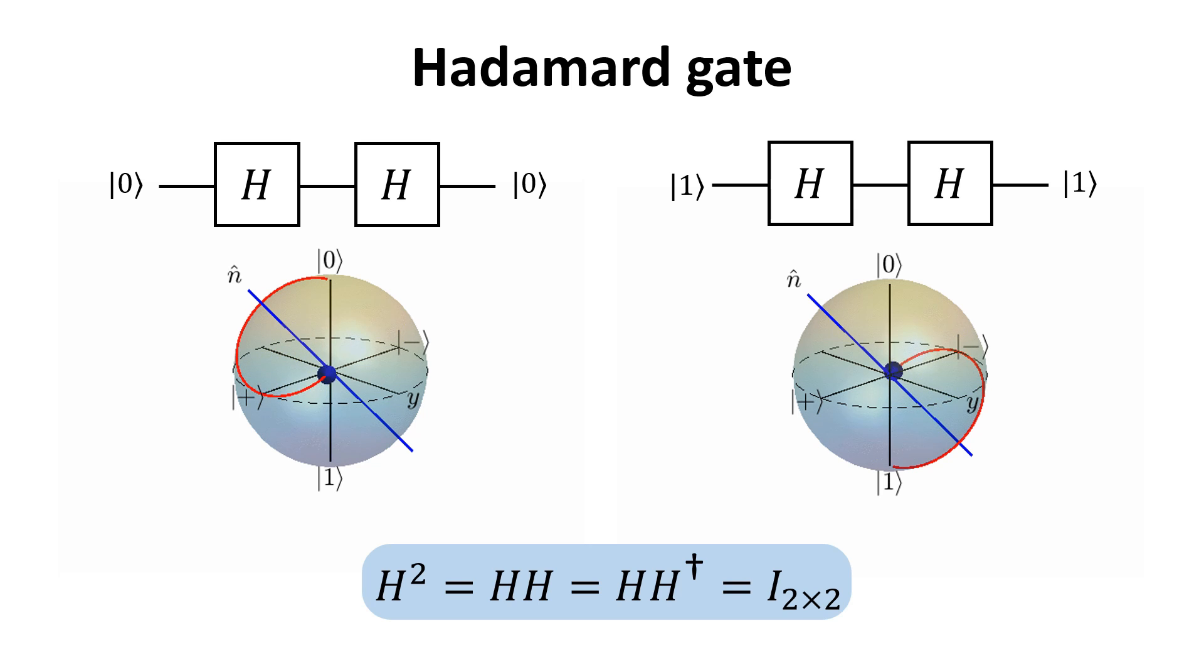We can also verify this through its matrix representation. Recall that the H gate is Hermitian and unitary. Since it is Hermitian, it is equal to its own transpose conjugate. Since it is also unitary, the product of itself with its transpose conjugate is equal to the identity matrix. Therefore, the application of two successful H gates leaves the initial qubit unchanged.